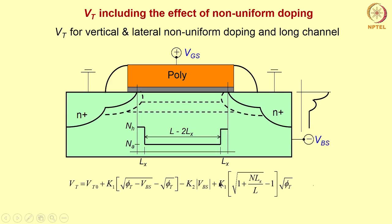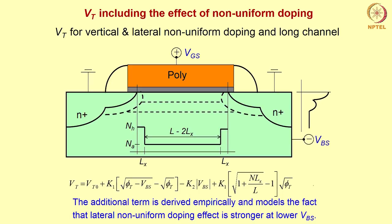The additional term arising from lateral non-uniform doping is derived empirically and models the fact that the lateral non-uniform doping effect is stronger at lower Vbs. Measurements show that lateral non-uniform doping affects the threshold voltage mainly at low Vbs — in other words, it affects Vt0. We want to find the new Vt0 due to these additional dopants.